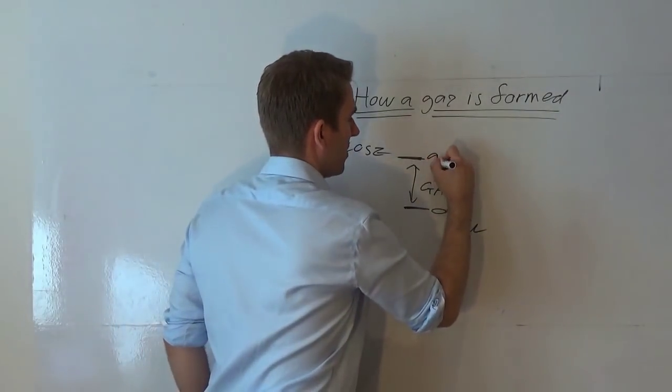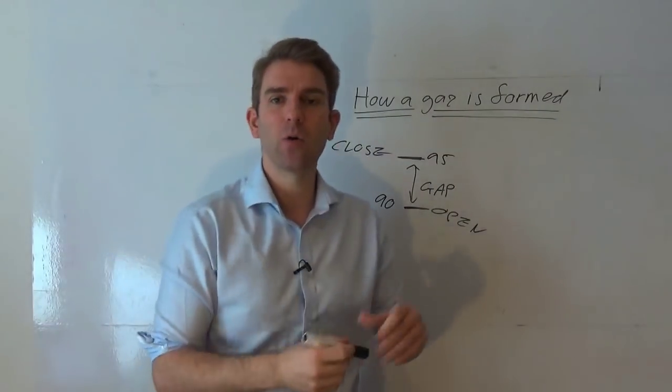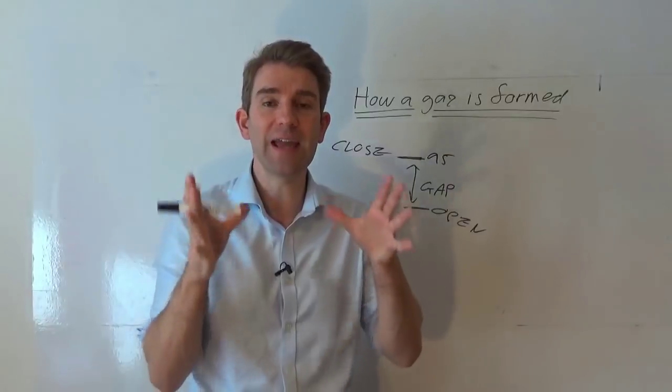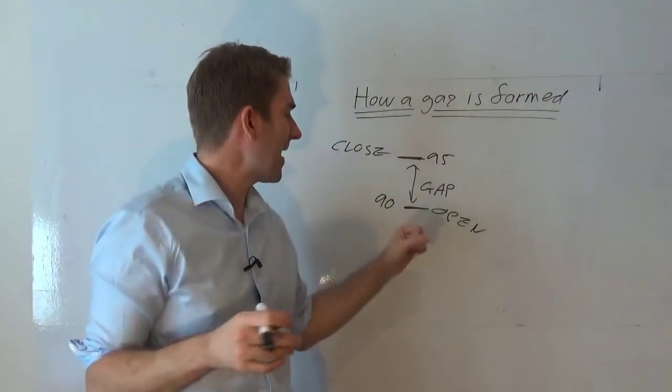So let's say we had that at 95, and then we've got a gap lower here to 90. So $5 gap down or whatever the instrument may be. That's the agreed price. So people are agreeing at that point in time that that current market is valued at that price.